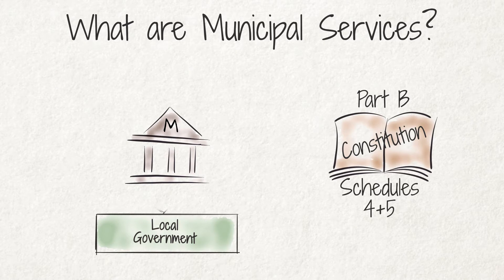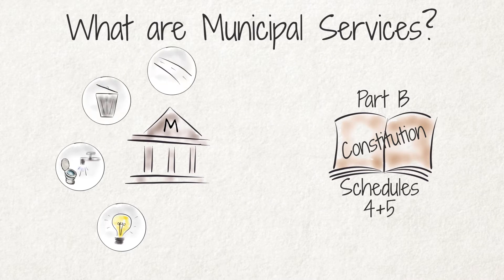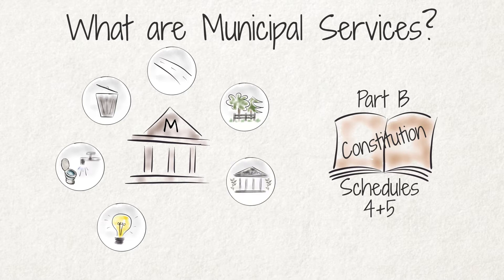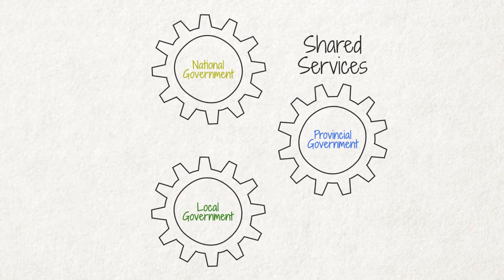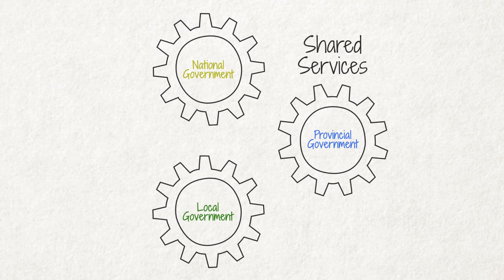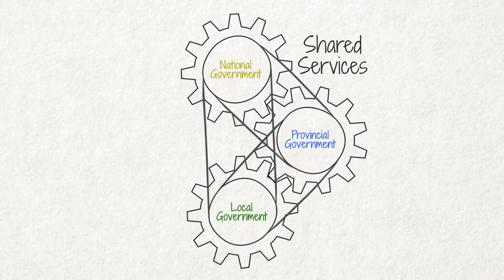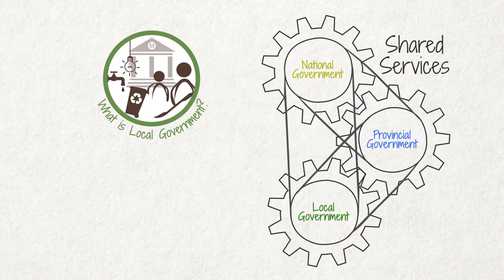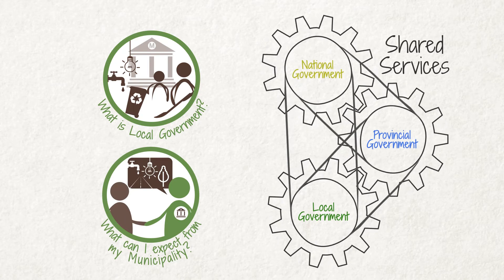These services include electricity, water and sanitation services, refuse removal, municipal roads, parks and recreation, community halls and public places, and cemeteries. Some services are shared services, meaning that different spheres of government have to collaborate in providing them. This is discussed in the videos 'What is local government?' and 'What can I expect from my municipality?'